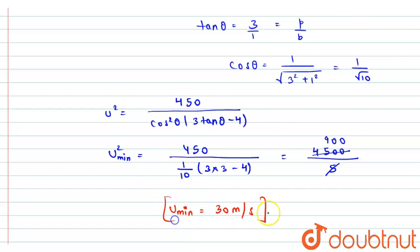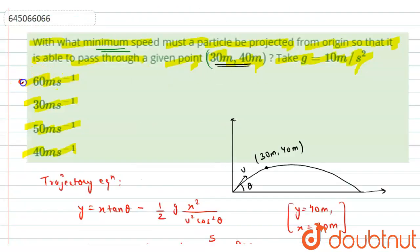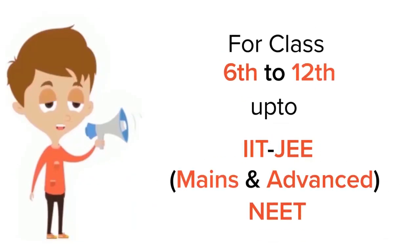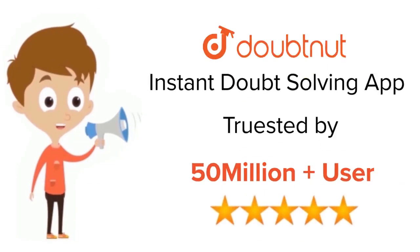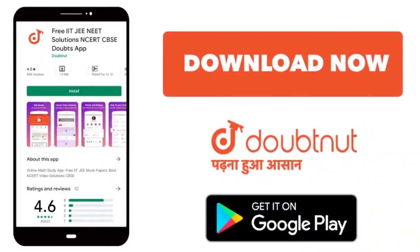So 30 m/s is the required answer, and from the given options, option B is correct. For class 6 to 12, IIT-JEE and NEET level — trusted by more than 5 crore students — download DoubtNet today.